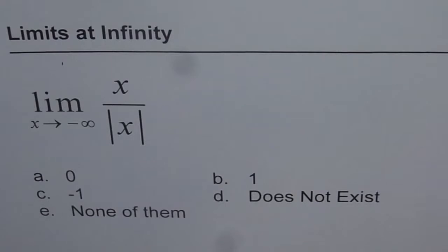Limits of the function at infinity give us the horizontal asymptote. Here the function is limit of x over absolute x where x approaches minus infinity, and we have five choices. Let's solve and then match the choice with our solution.